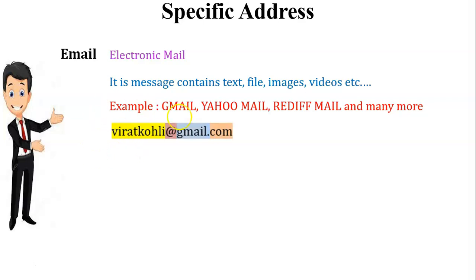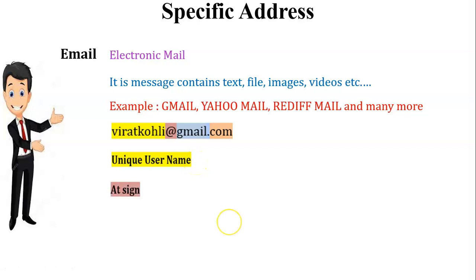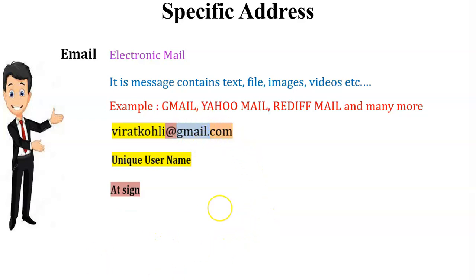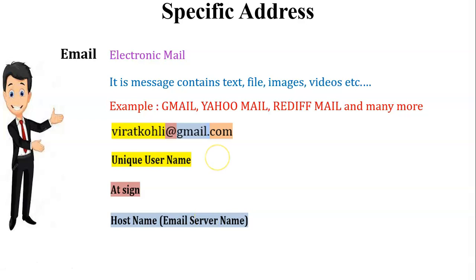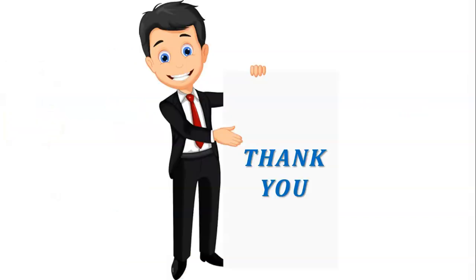Let us see an example of an email address. An email address is made up of four different parts. The first one is the username, which is unique and chosen by the user. The second one is the '@' sign. The third one is the host name or email server name — for example, gmail. The fourth one is the top-level domain, here '.com'. So there are two types of specific addresses used in the network: URL and email. Thank you for watching this video.